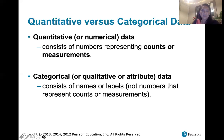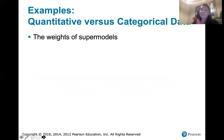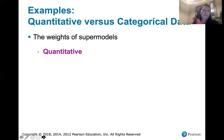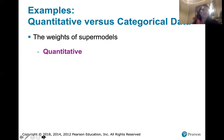So let's look at a couple of examples. We've got weights of supermodels — is that quantitative data or categorical data? Weights. I hope you said quantitative data, because if I'm measuring something, if I'm collecting weights and writing them down in kilograms or pounds, then I'm looking at a bunch of numbers, and those numbers are measurements of these supermodels' weights. So that is quantitative data.